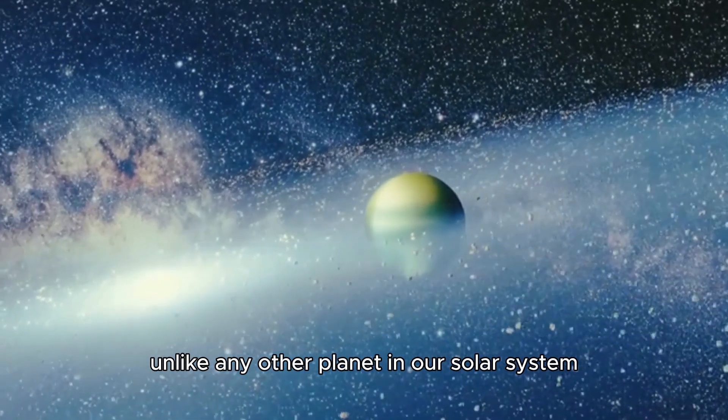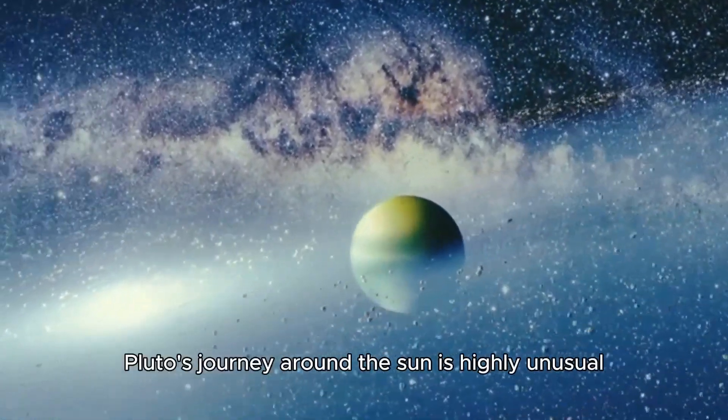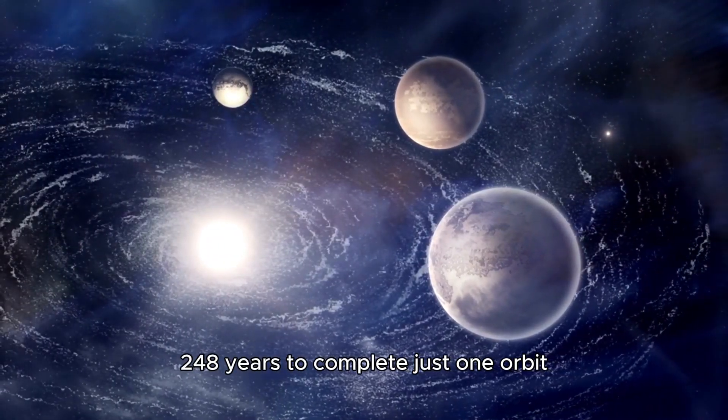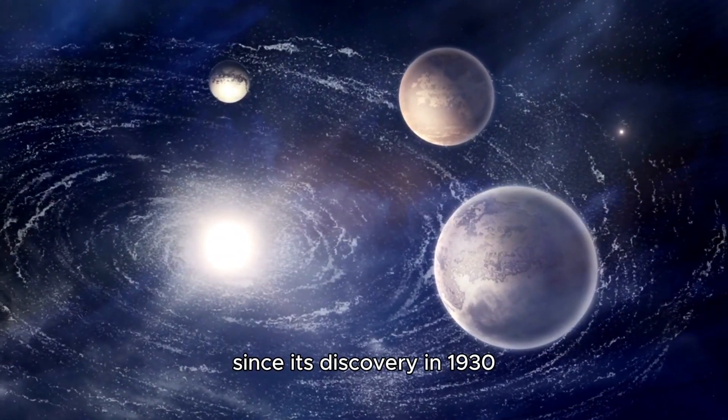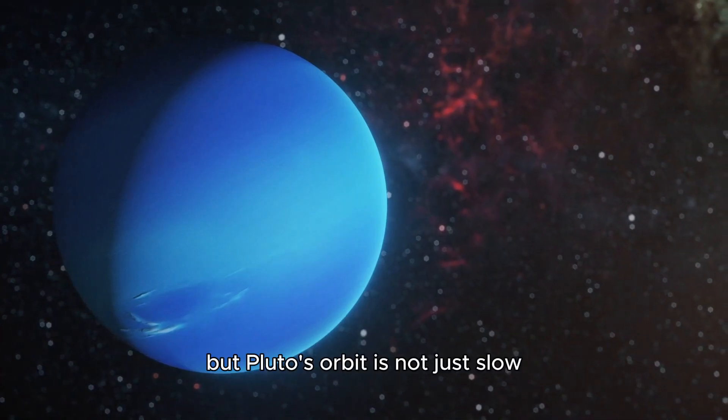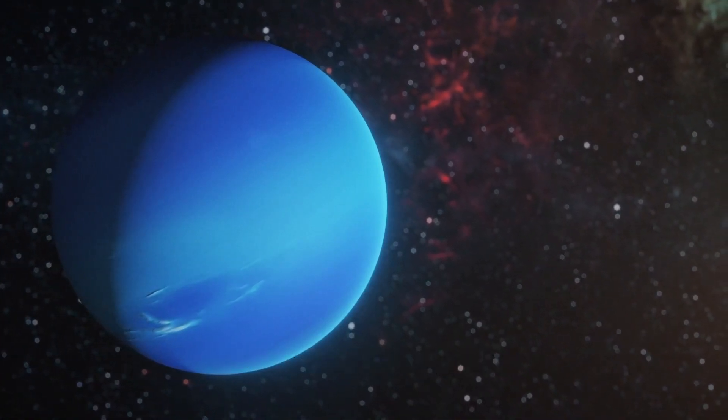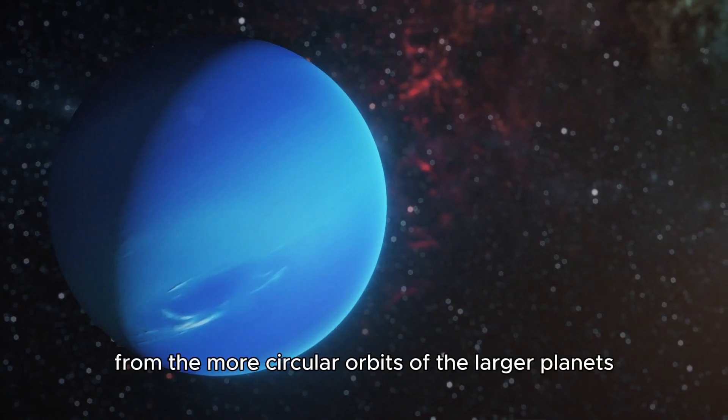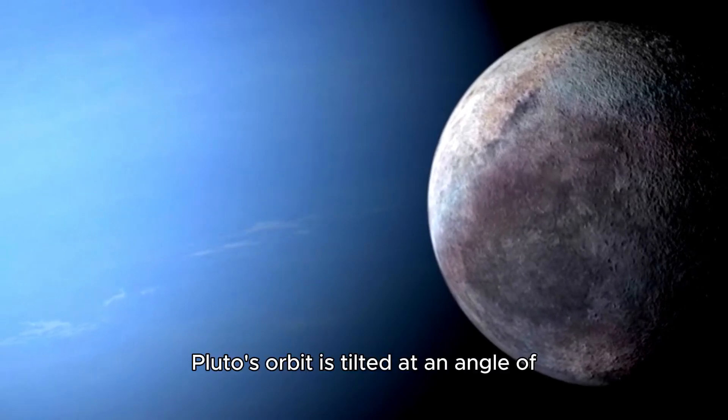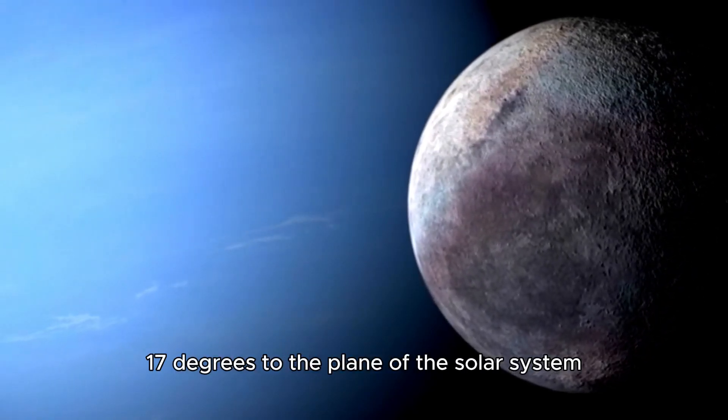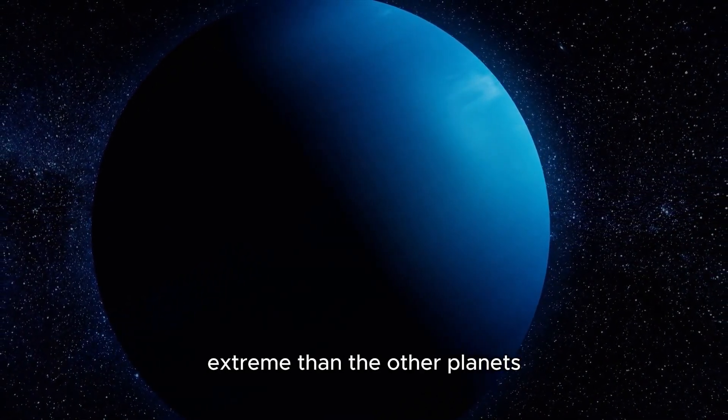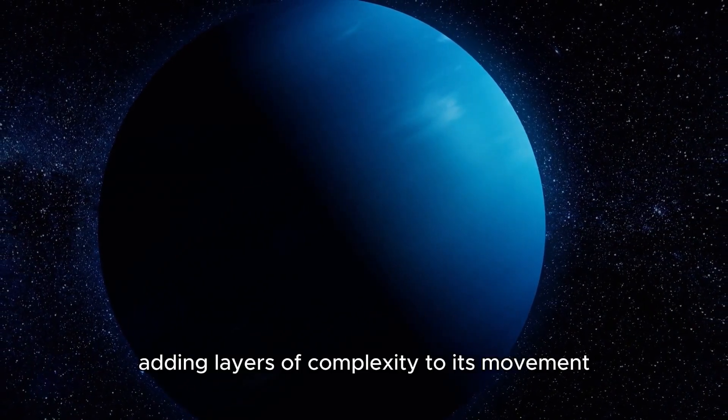Unlike any other planet in our solar system, Pluto's journey around the Sun is highly unusual. It takes a remarkable 248 years to complete just one orbit. Since its discovery in 1930, Pluto hasn't even finished one full orbit, which adds to its mystique. But Pluto's orbit is not just slow, it's also highly elliptical, vastly different from the more circular orbits of the larger planets. To complicate things further, Pluto's orbit is tilted at an angle of 17 degrees to the plane of the solar system. This inclination makes its path much more extreme than the other planets, adding layers of complexity to its movement.